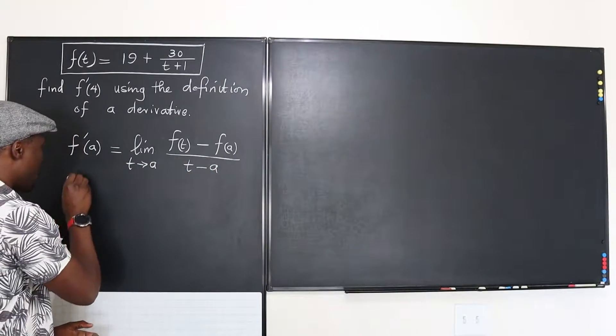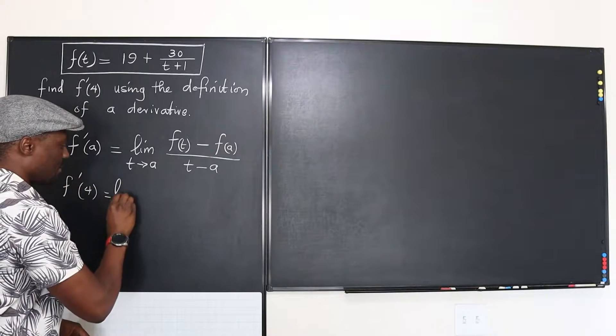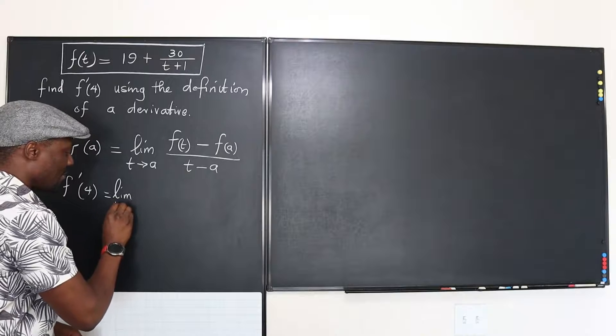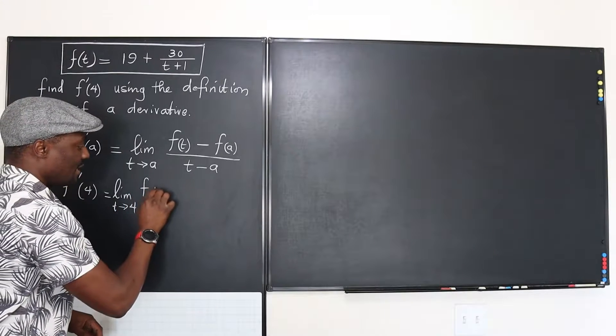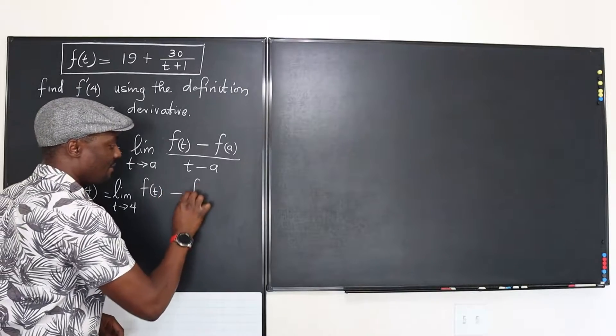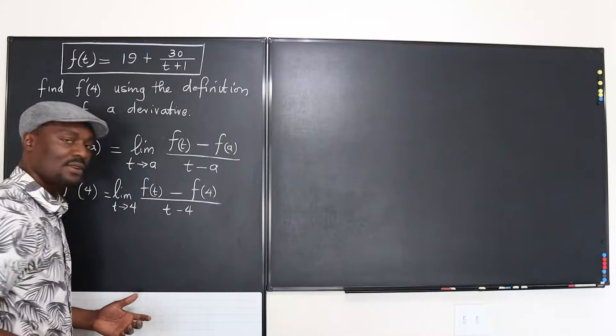So at this point, f prime of 4 is going to be the limit as t approaches 4 of f of t minus f of 4 divided by t minus 4, beautiful.